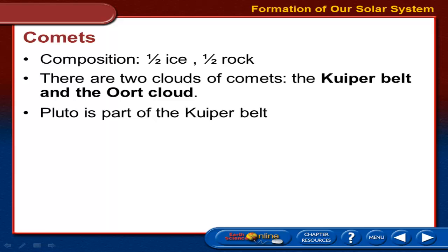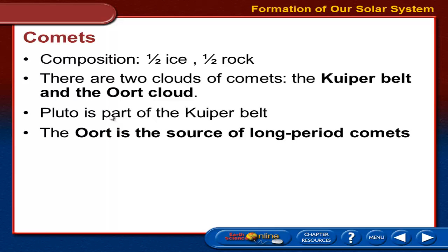Pluto is part of the Kuiper Belt — it is one of these large comets, basically, that's half ice, half rock. It's actually one of the largest, but it may not be the largest anymore. The Oort Cloud, however, is another space that's further out, and this is where you find comets with really long periods — hundreds or even thousands of years.